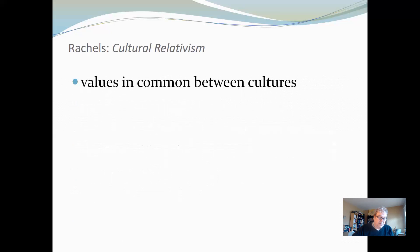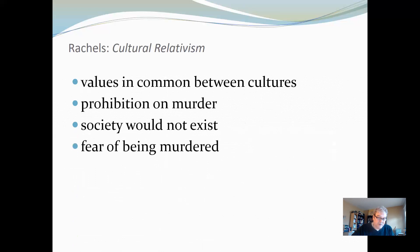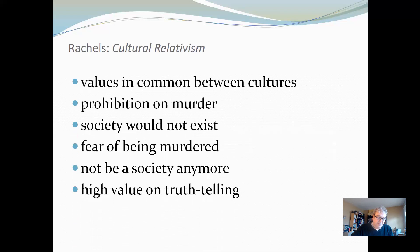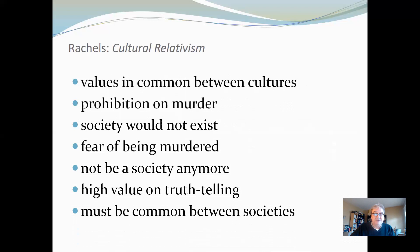In the last part of the article, Rachels makes the case that we actually have a lot of values in common between cultures. All cultures must have a prohibition on murder, because if they didn't, the society would not exist — people would scatter out of fear of being murdered. Similarly, every society must place a high value on truth-telling, because societies where people could not depend on each other to cooperate would soon cease to exist. So some moral rules, it seems logically, must be common between societies for those societies to exist at all.